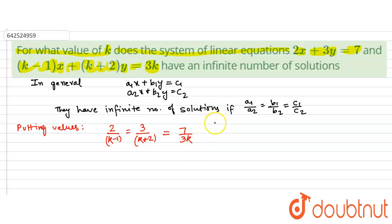So for that, first let's take the first equation: 2 times (k plus 2) equals 3 times (k minus 1). That would give us 2k plus 4 equals 3k minus 3, which further implies that 7 equals k. So from here we get k equals 7.